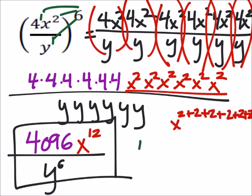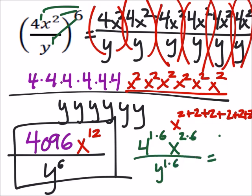So I really ended up with four to the power of one times six, x to the power of two times six, and y to the power of one times six. So that was four to the power of six, x to the power of 12, over y to the power of six.